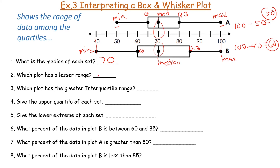Which plot has a greater interquartile range? I look at the boxes. Graph B's box goes from 60 to 85, giving an IQR of 25. Graph A's box goes from 65 to 80, giving an IQR of 15. So graph B has the greater interquartile range. The upper quartile of graph A is 80 and graph B is 85.